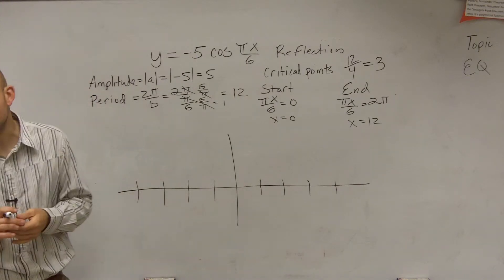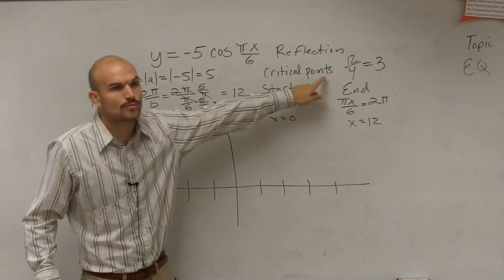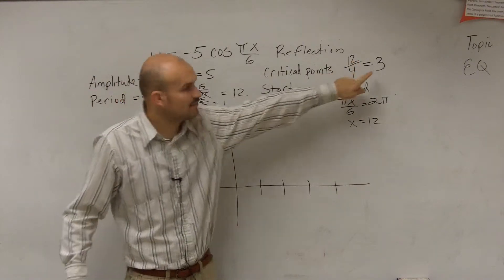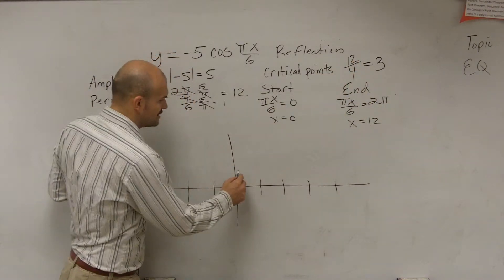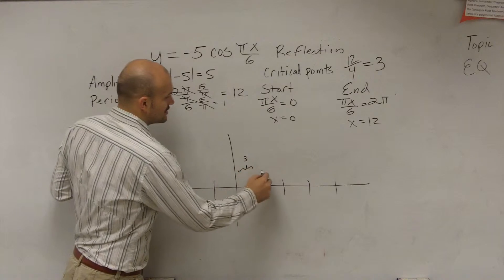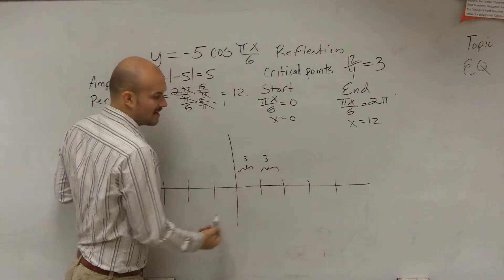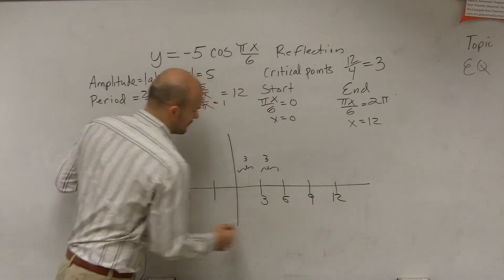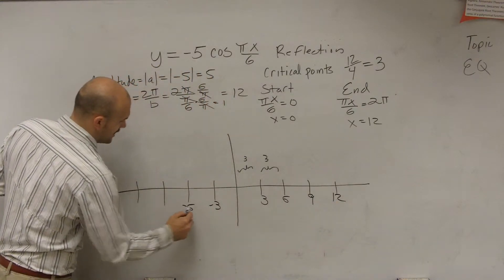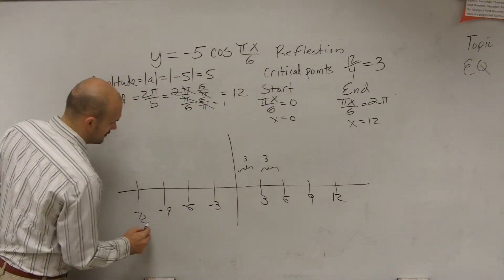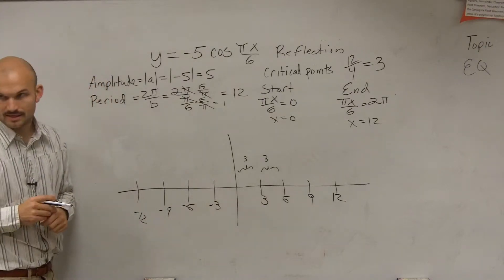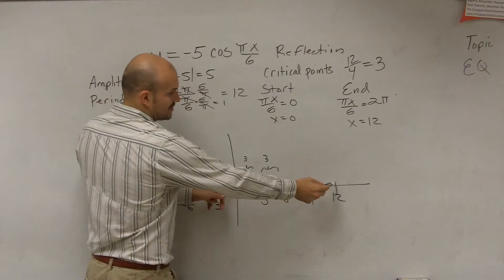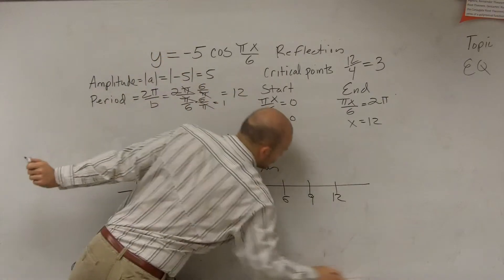I'm going to go in the positive and the negative direction. The distance between the critical points — your period divided by 4 — is 3. That means each one of these distances is 3. So if you just add it up: 3, 6, 9, 12 in the positive direction, and negative 3, negative 6, negative 9, negative 12 in the negative direction. And that also, you can see, is going to be your distance of your period.